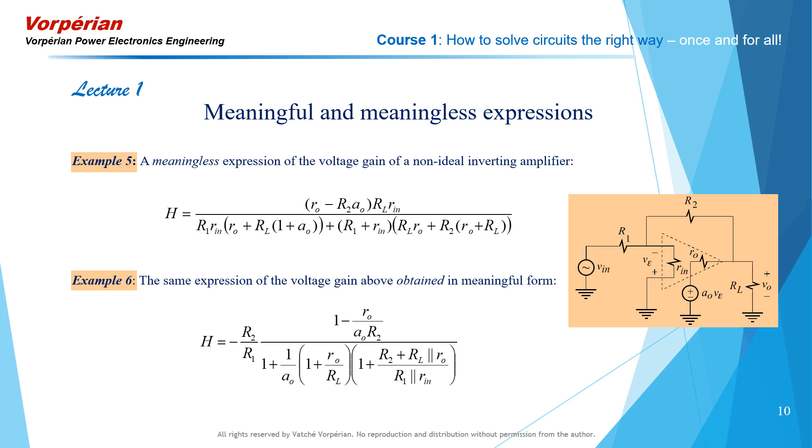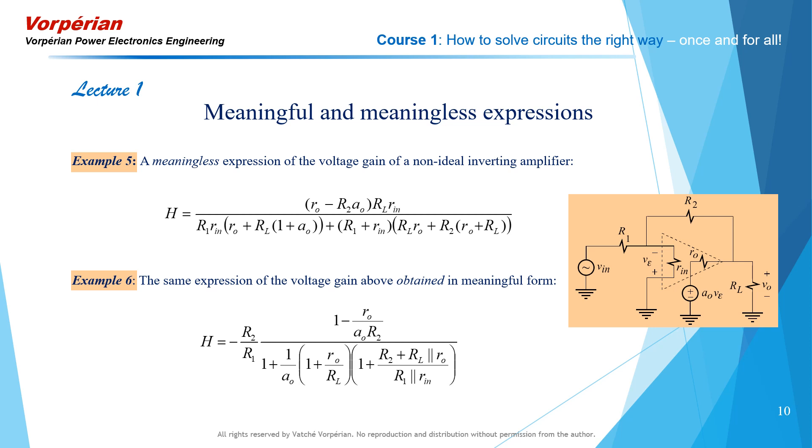You can see very clearly that a meaningful expression conveys a lot more information as to what is going on inside the circuit, and it is readily available for approximations without much work. Just one look, you see one element dominating, the term drops out. It approximates very easily. And that's the value of this kind of analysis that I'm going to teach you in this course.